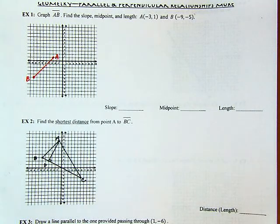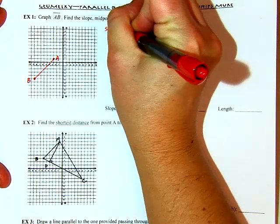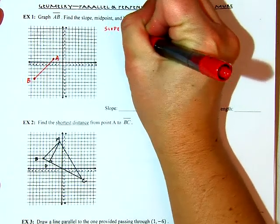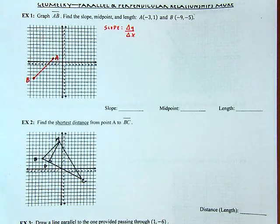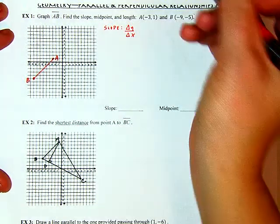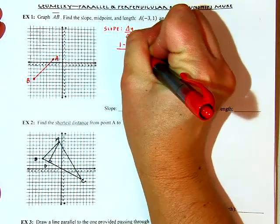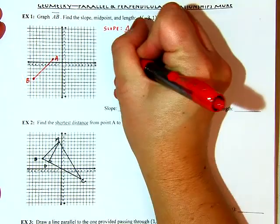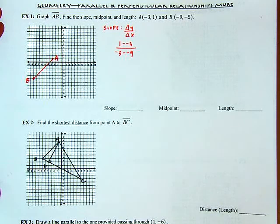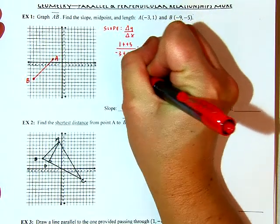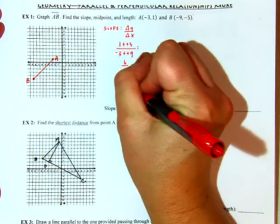First I want the slope. Slope is rise over run, or change in Y over change in X — the vertical change over the horizontal change. The order I pull the Y values and X values doesn't matter, I just have to be consistent. So Y values: 1 minus negative 5, over negative 3 minus negative 9. Subtracting a negative goes to a positive, so I have 6 over 6, which gives a slope of 1.